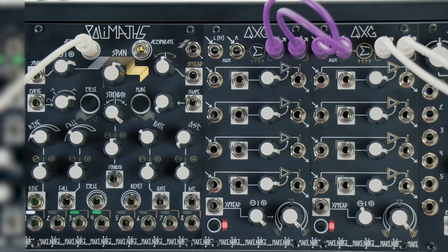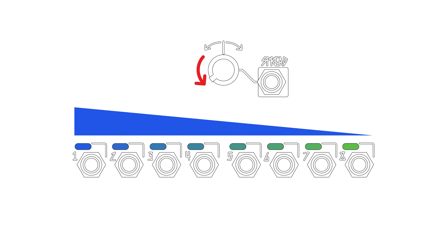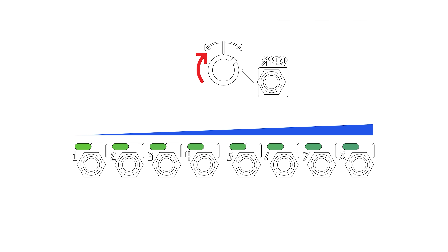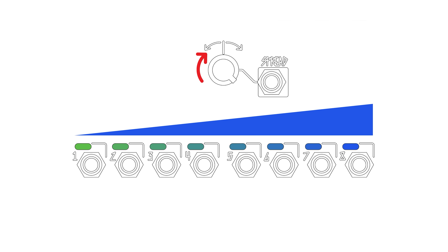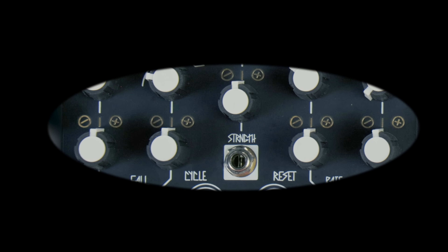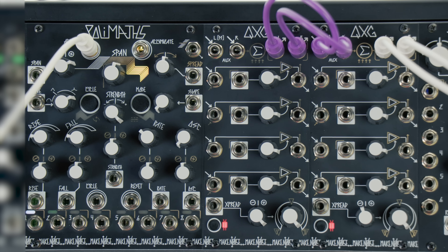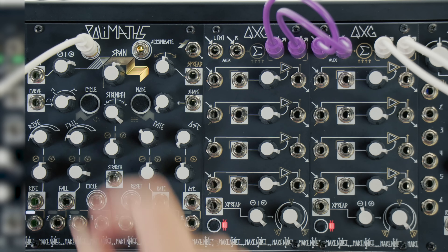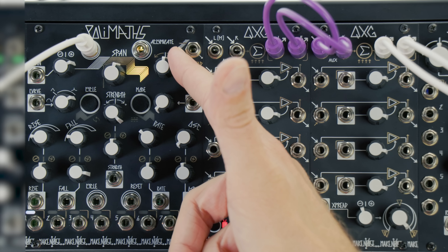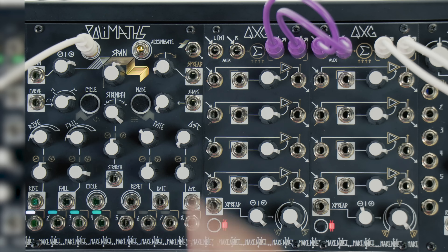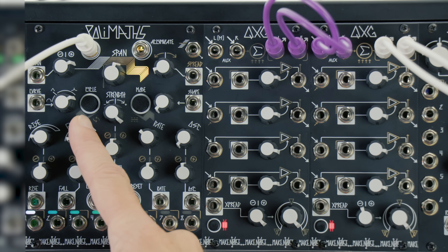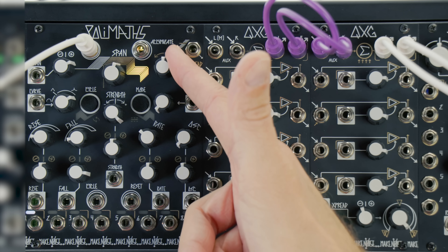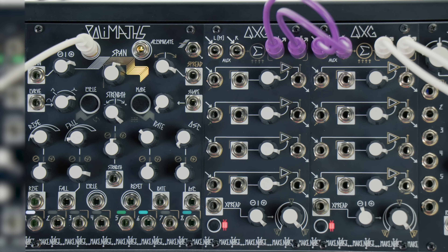The spread control affects all channels to differing amounts based on the direction of the spread parameter. When spread is set to the left of 12 o'clock, channels further to the left are more affected. When spread is set to the right of 12 o'clock, channels further to the right are more affected. Individual parameters' spread depth is set by their respective input attenuators. Let's try it out by spreading the fall parameter. We turn the attenuverter up from midnight, and this means that spread channels will have a longer fall time. The spread knob lets us spread this to the left or to the right. Note how the channels further to the spread direction now have longer fall times.